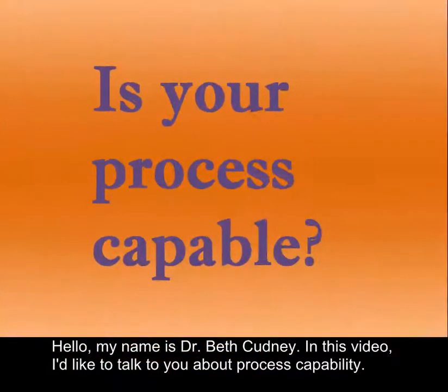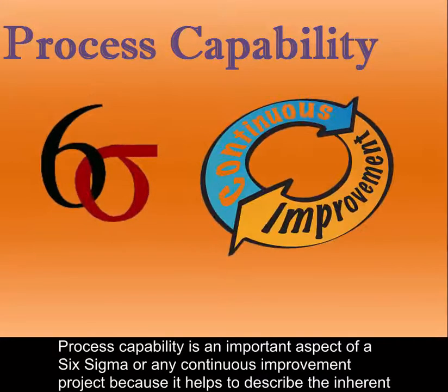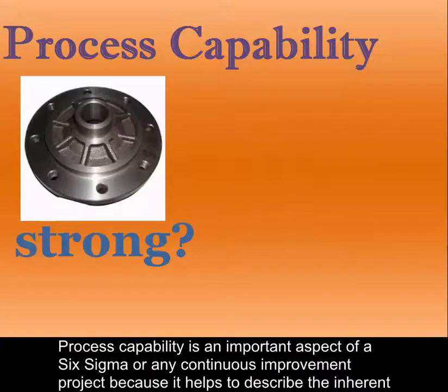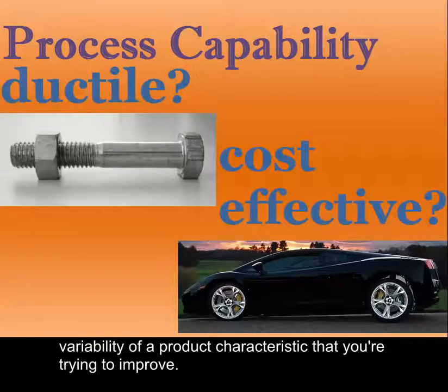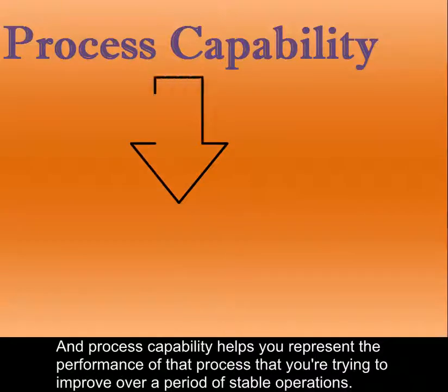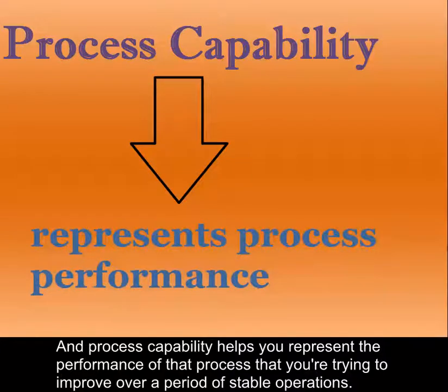Hello, my name is Dr. Beth Kudney. In this video, I'd like to talk to you about process capability. Process capability is an important aspect of a Six Sigma or any continuous improvement project because it helps to describe the inherent variability of a product characteristic that you're trying to improve. Process capability helps to represent the performance of that process you're trying to improve over a period of stable operations.